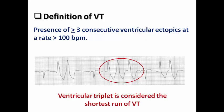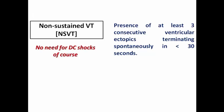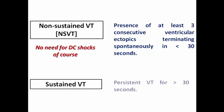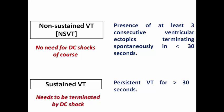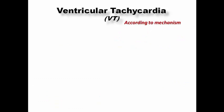We define VT as presence of three or more consecutive ventricular ectopics at a rate exceeding 100 bpm, so we consider a ventricular triplet as the shortest run of VT. We have non-sustained VT which resolves spontaneously in less than 30 seconds, so no need for DC shock in this case, or sustained VT in which the VT persists for more than 30 seconds, so it would mostly need to be terminated by DC shock.